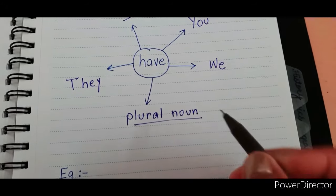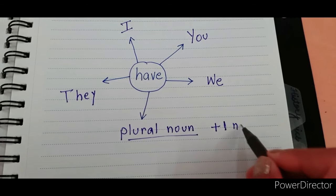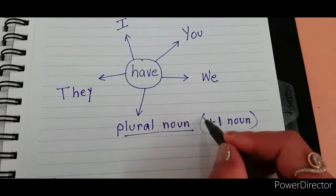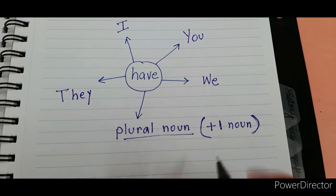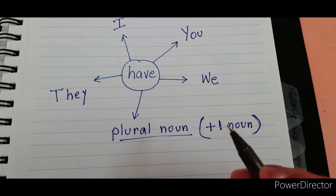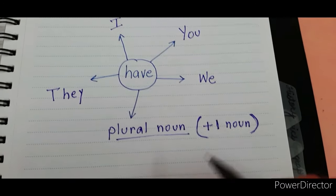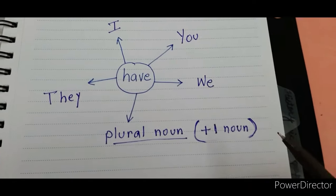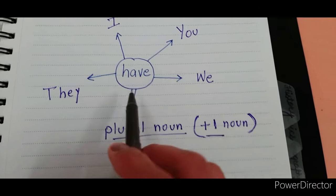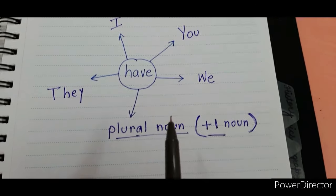Plural noun means more than one noun. If there is only one noun, we use 'has'. If there are more than one noun — two, three, four, one hundred, one lakh, one crore — any number more than one, we use 'have'. Plural means many, more than one.